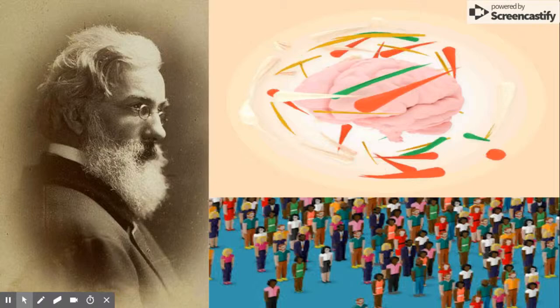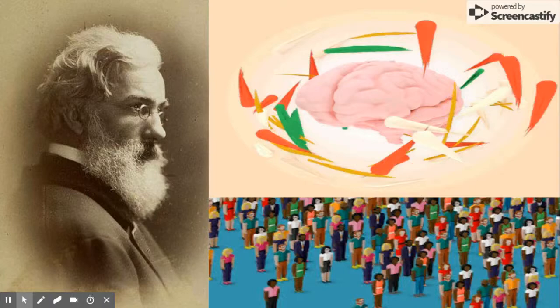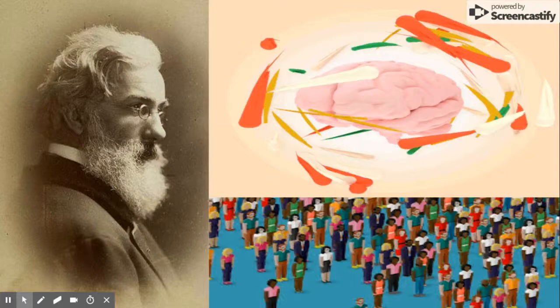Theory number three is that long-range migration tends toward urban centers. For refugees, they do not move to a long-distance country — they don't move far away. Like if you're in Australia, you're not going to move to America.